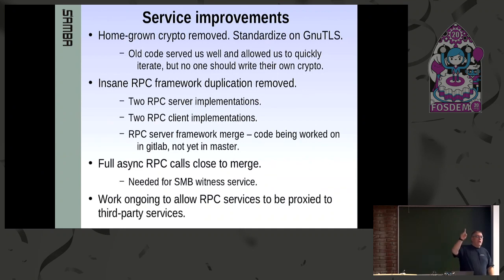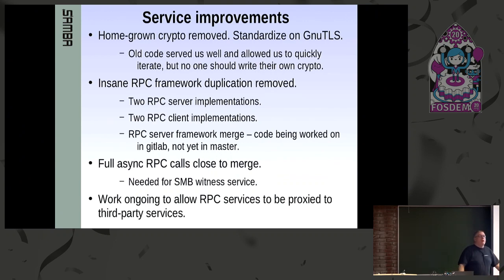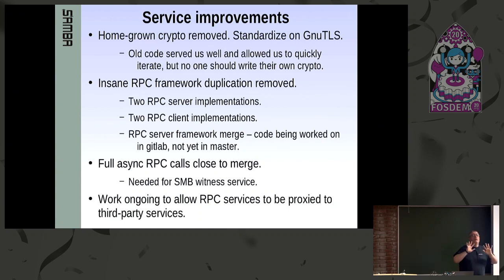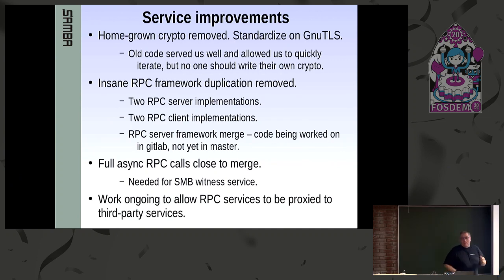Don't write your own crypto code — it's just like you wouldn't smelt the metal to make your own car. Leave it to the experts. We decided to standardize on GNU TLS, feeding back to the GNU TLS maintainers to fix some things we needed. We basically outsourced that source of CVEs — vulnerability announcements — to GNU TLS. So now we can blame them for everything. That's great.